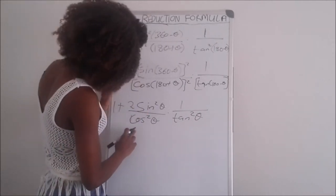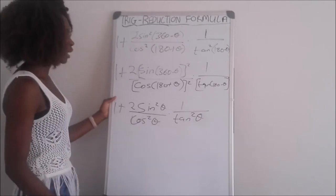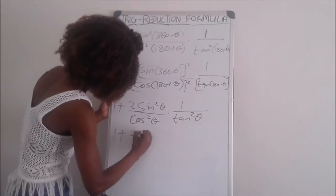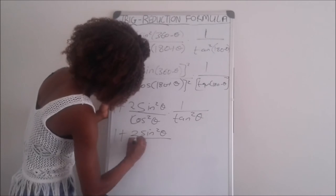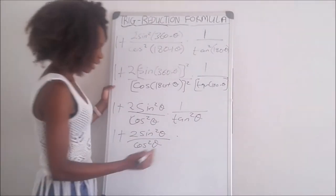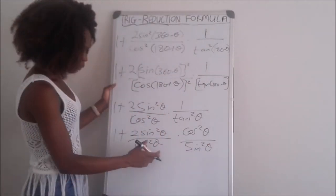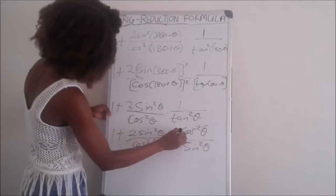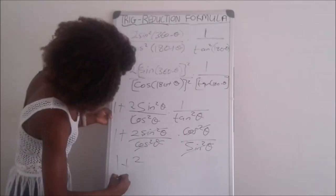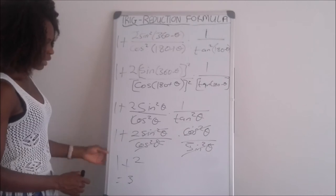Now we have 1 plus 2 sin squared theta, divided by cos squared theta, multiplied by 1 divided by tan squared theta. We change tan squared theta into sin squared theta over cos squared theta, so 1 over tan squared theta becomes cos squared theta over sin squared theta. The cos squared terms cancel, and the sin squared terms cancel, leaving 1 plus 2, which equals 3.